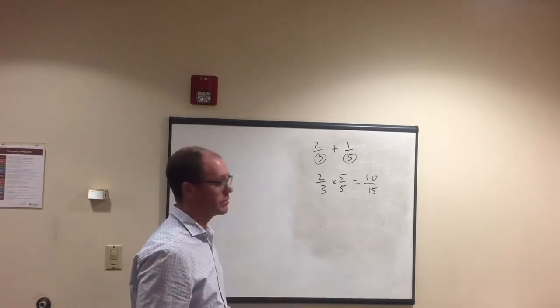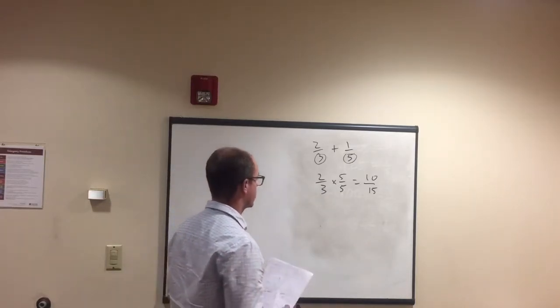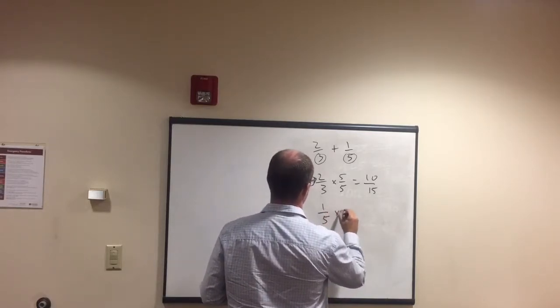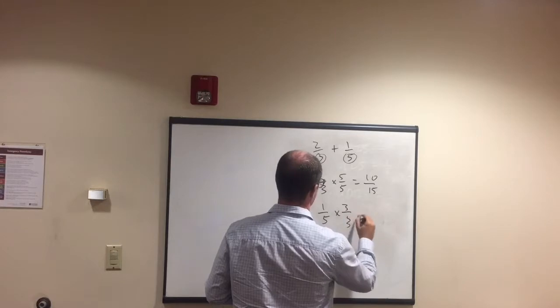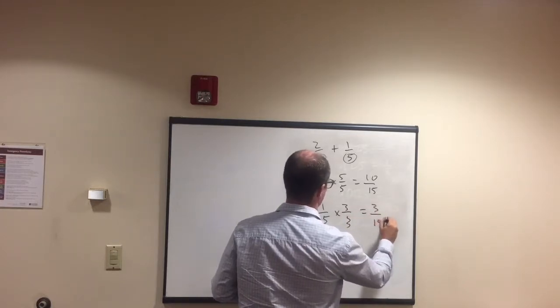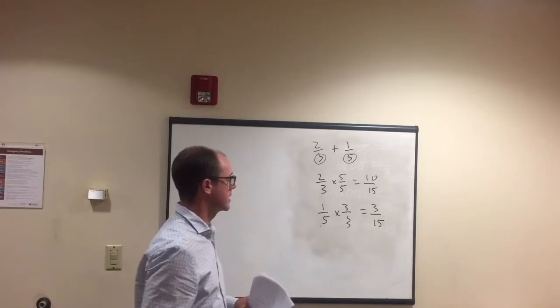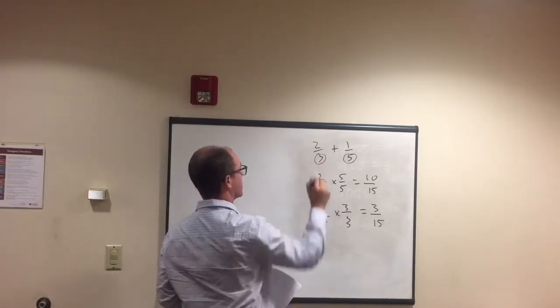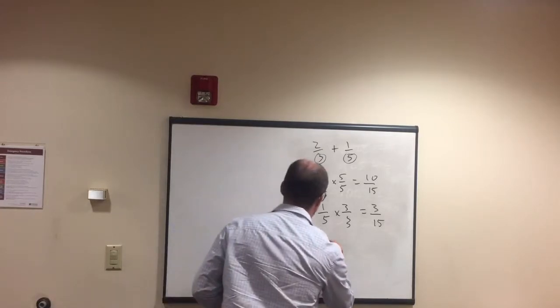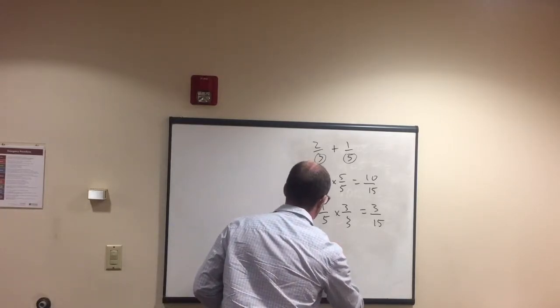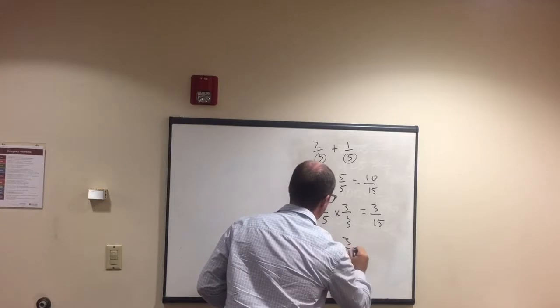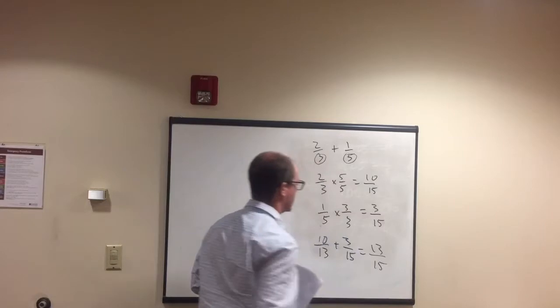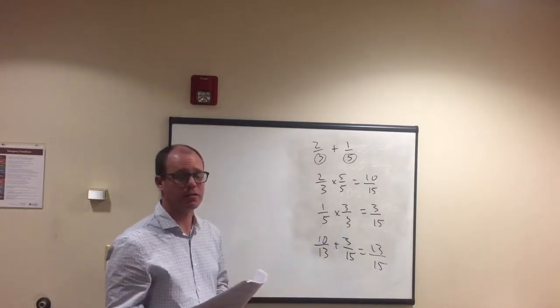Those 2 thirds and 10 over 15 mean the same thing. And then 1 fifth times 3 over 3 equals 3 over 15. Okay, so now we've got what's called the denominator, the same, what we call common denominator. And then we can add those up, we get 13 fifteenths.